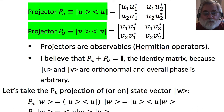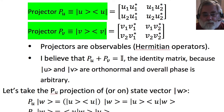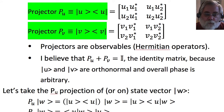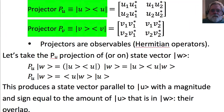The sum of these two projectors, p sub u plus p sub v, equals the identity matrix because u and v are orthonormal and overall phase is arbitrary. Let's see what the p sub u projection onto state vector ket w would be.